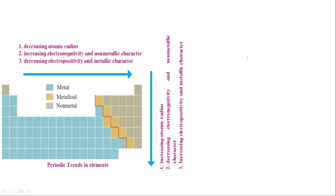Hello everyone, my name is Jigar Shukla and today we are going to continue the chapter on periodic classification of elements. We have already discussed the history, and today we will be continuing with trends in the modern periodic table — what changes occur as we go left to right across a period, or down a group.